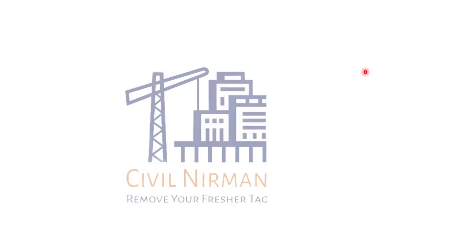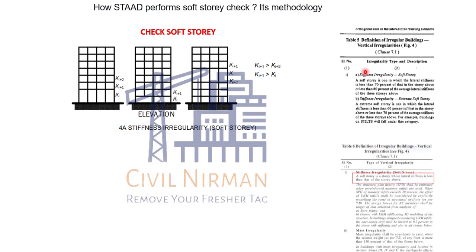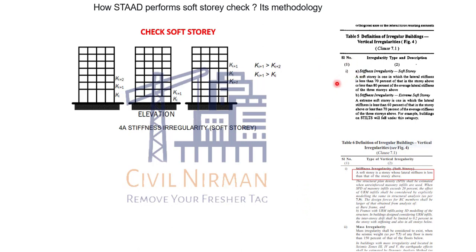Now let's understand how the software performs soft story check and its methodology. In the previous version IS 1893-2002 the soft story definition was in Table 5, and it was a little different compared to the latest one. In the latest version the definition is in Table 6. In the previous version, IS 1893 code says that in the absence of dynamic analysis the soft story has to be designed for 2.5 times the story shear and moments — for the design of members in open or soft story we have to multiply the moments and shear of columns and beams in the soft story by a factor of 2.5.